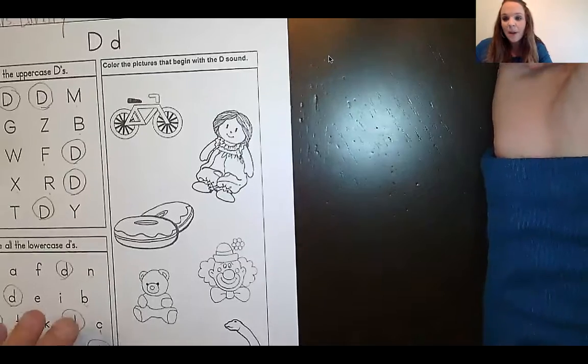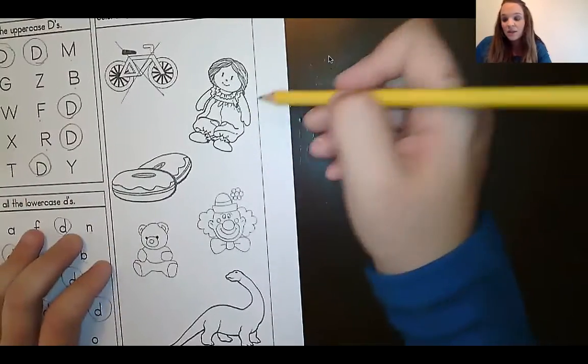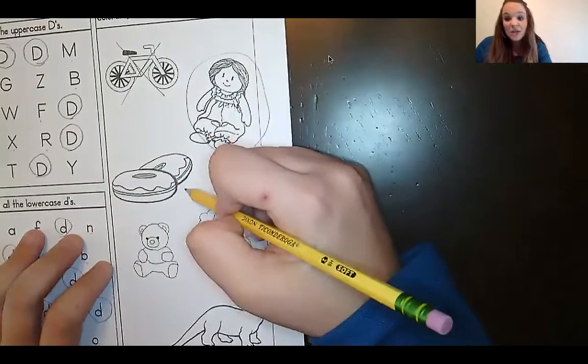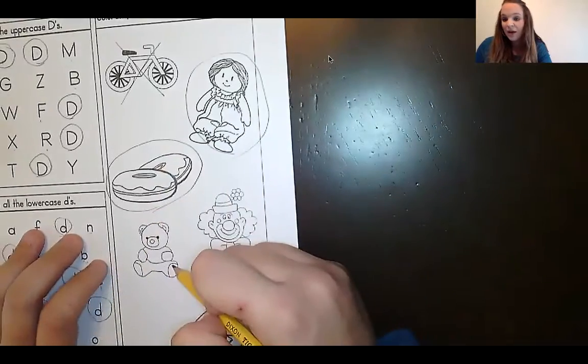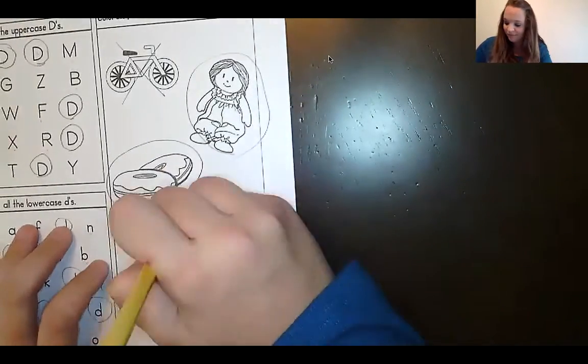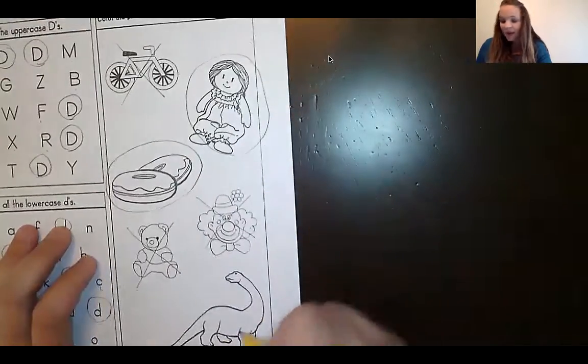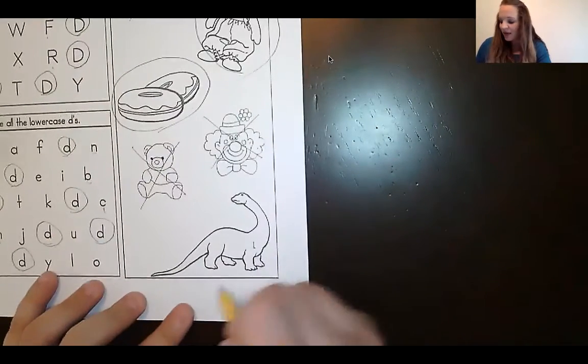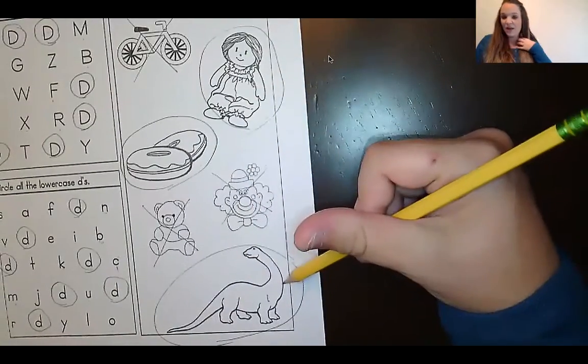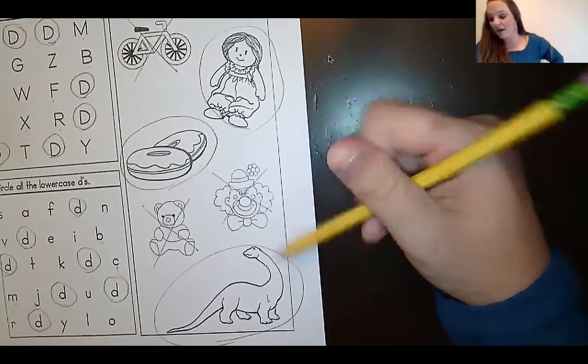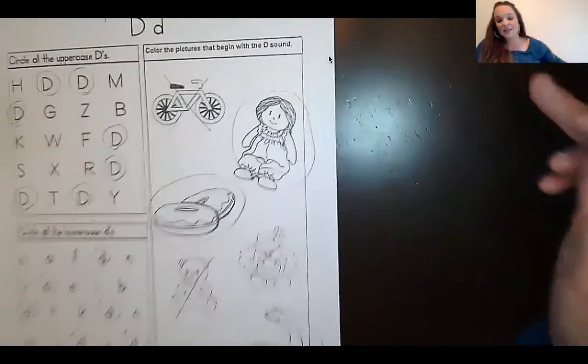Bicycle. Does that start with D? Bicycle. Nope. Doll. D-D-Doll. Yeah. Donut. D-D-Donut. Bear. Clown. Dinosaur. D-D-Dinosaur. Yeah. So you should have circled the doll, the donut, and the dinosaur. And those are going to be the ones that you color. Don't color the ones that you put X's on. It says to only color the pictures that begin with the D sound.